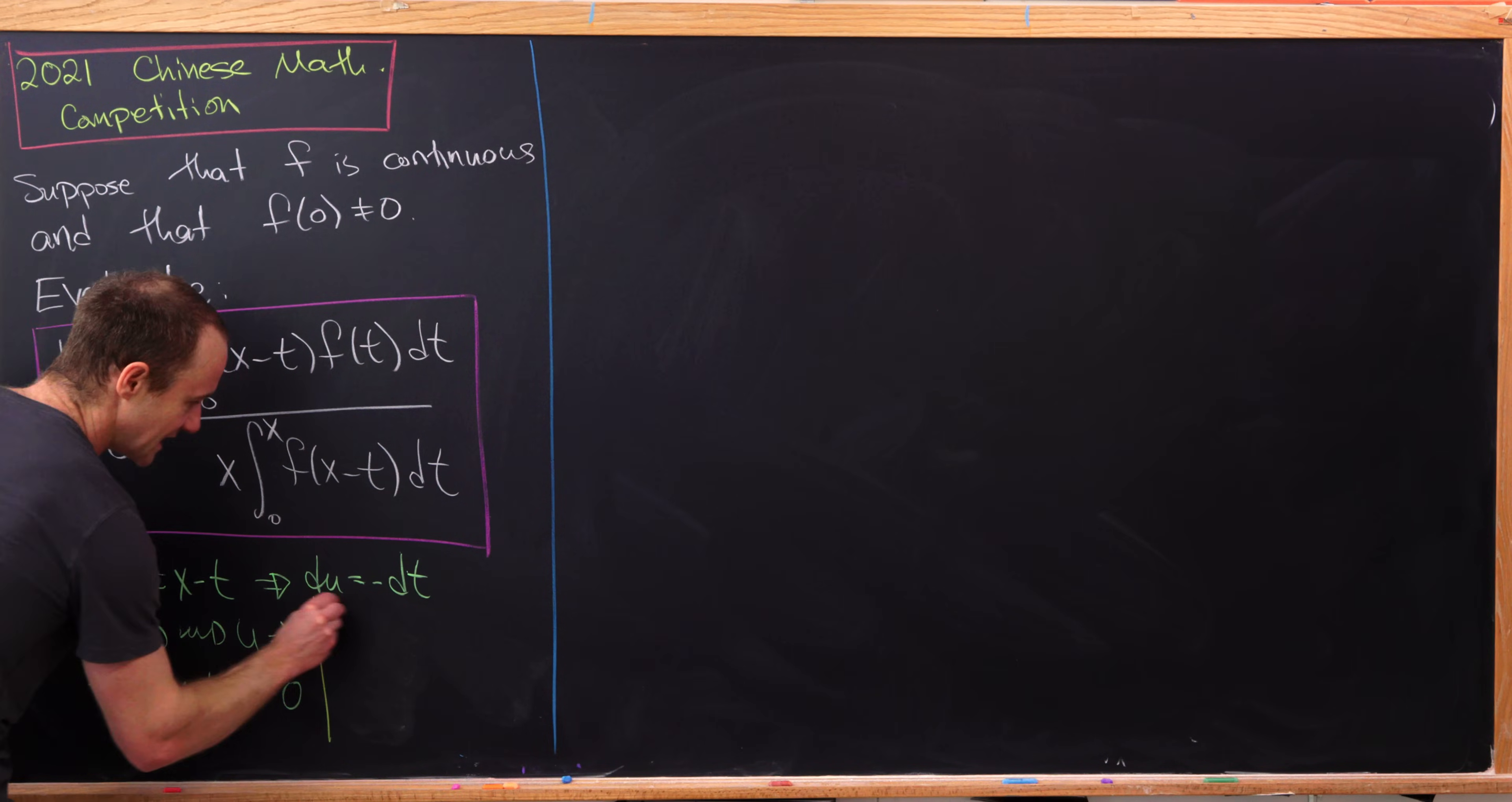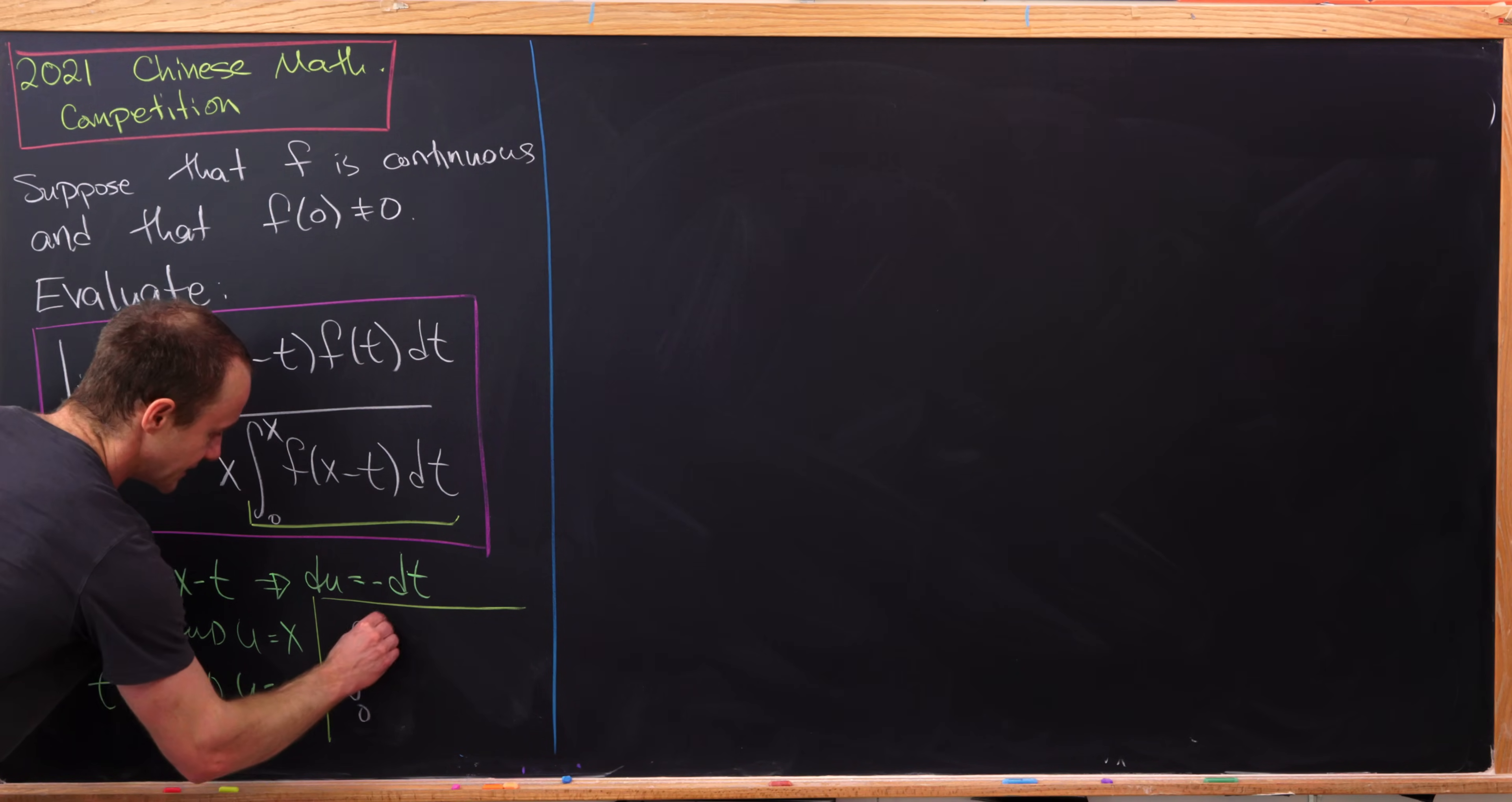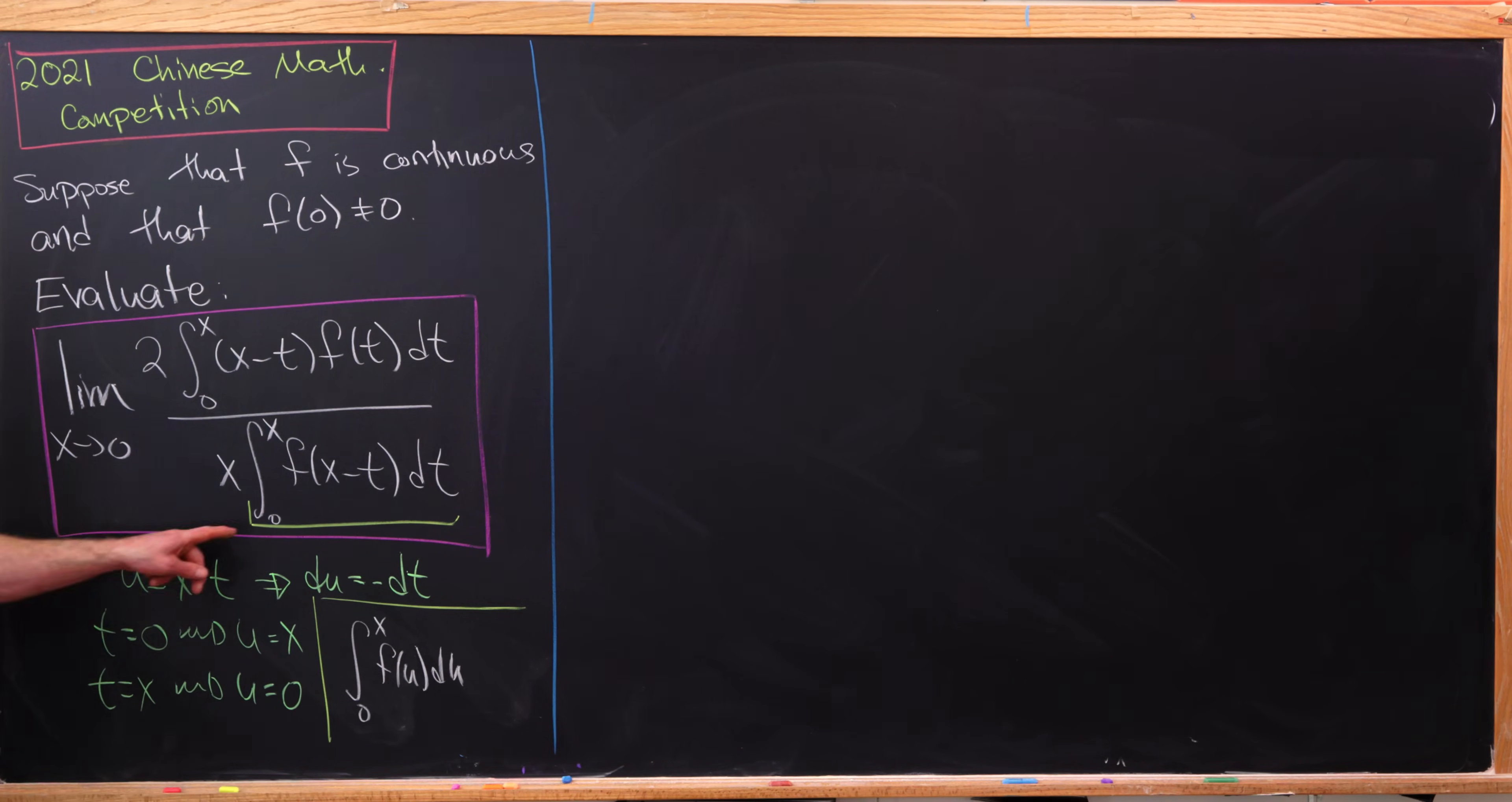So that means this integral that I have here that I'm underlining in yellow turns into the integral from zero to x of f of u du, where I use this minus sign to swap the bounds of integration back to where they started.